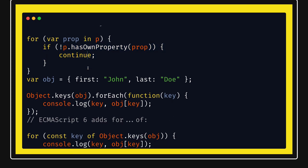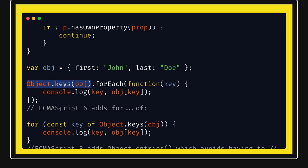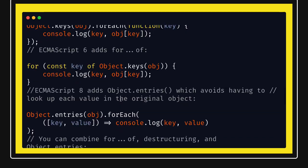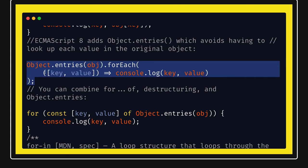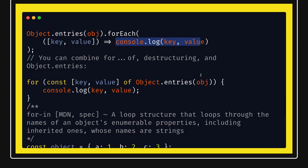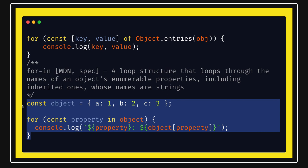We also have Object.keys, Object.values, and Object.entries. Object.keys gives you an array of keys — like first, last — and since it's an array, you can run forEach, map, filter, or reduce on it, or a for...of loop. Object.values gives you the values. Object.entries gives you key-value pairs as an array — this is one of the most important ones. With destructuring in a for...of loop, you can easily print both keys and values for an object.